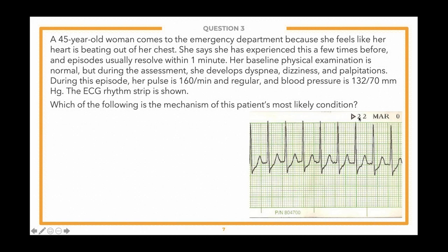A 45-year-old woman comes to the emergency department because she feels like her heart is beating out of her chest. She says she has experienced this a few times before, and episodes usually resolve within one minute. Her baseline physical examination is normal, but during the assessment she develops dyspnea, dizziness, and palpitations. During this episode her pulse is 160 per minute and regular, and blood pressure is 132 over 70.